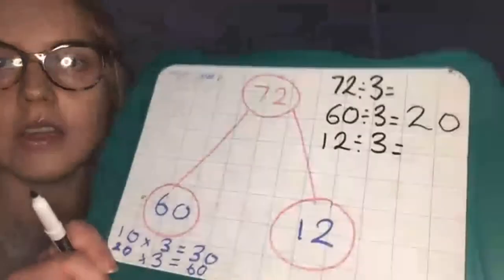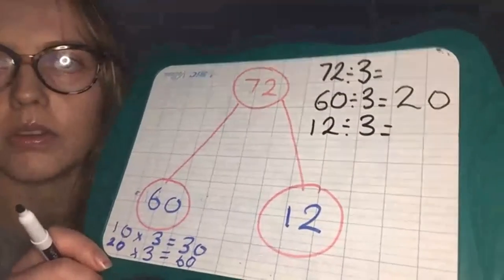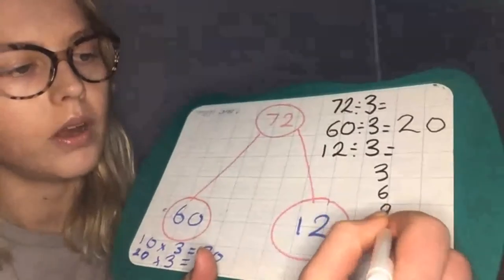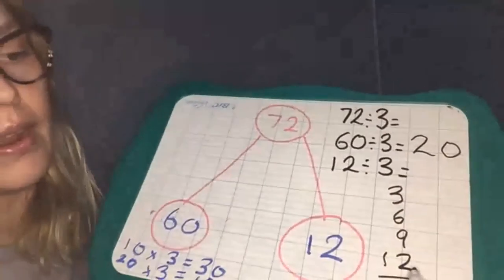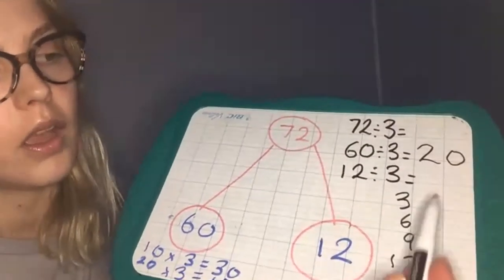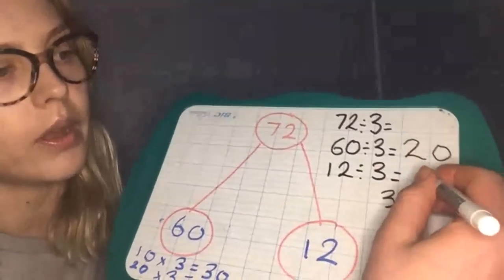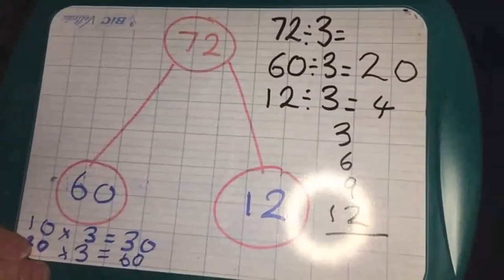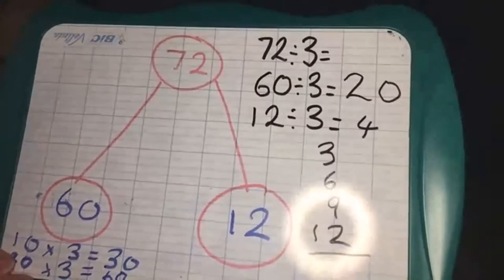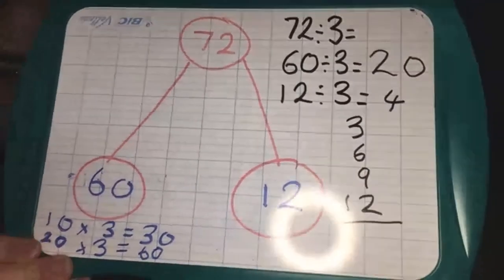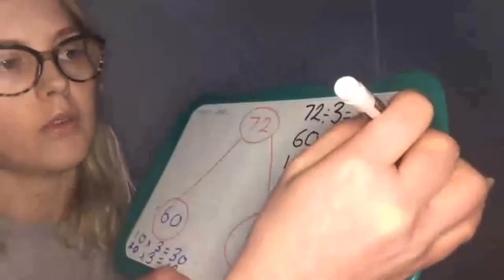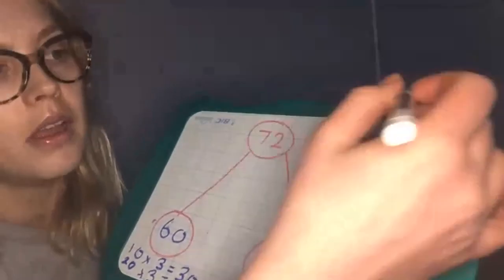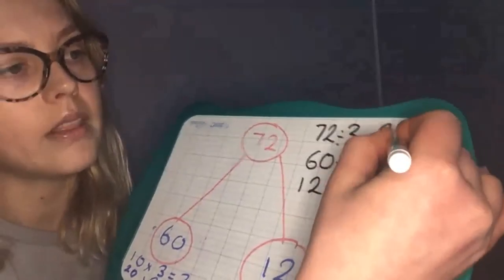Then this one here — hopefully you should be able to answer using your three times table knowledge. 3, 6, 9, 12 — how many lots of 3 are there in 12? Hopefully you're saying 4, so 12 divided by 3 is 4. Now, do we think this is the final answer? Have we got what 72 divided by 3 is? What do you think you need to do here?